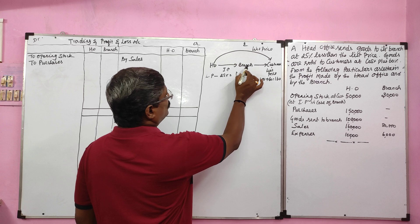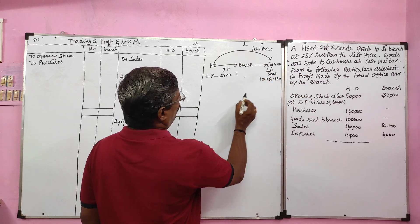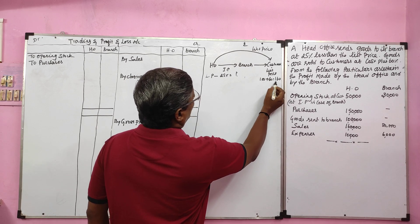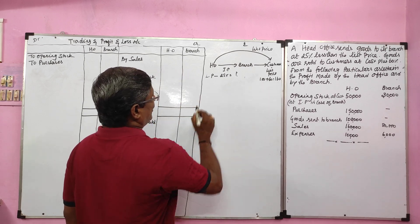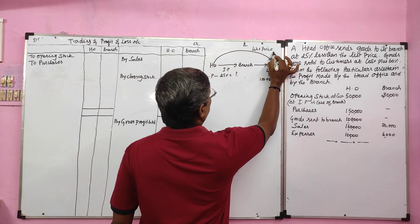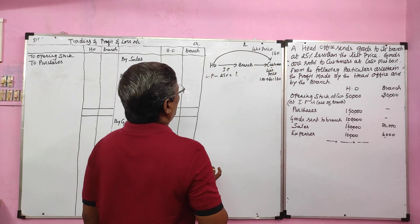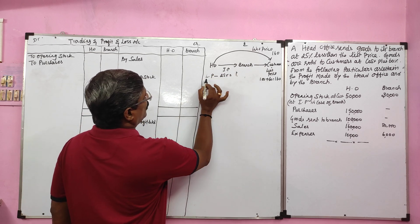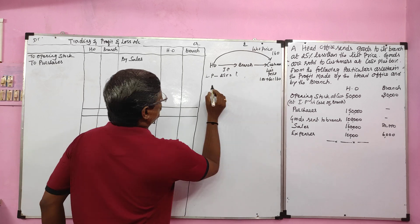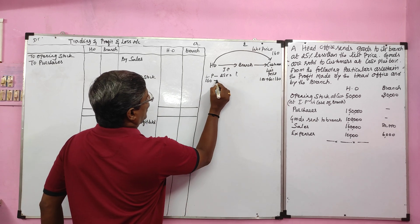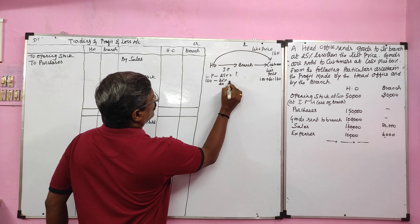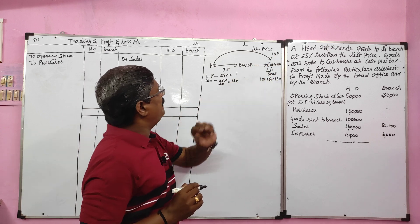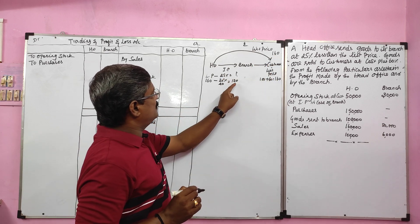The branch sells goods to its customers at cost plus 60% — cost is 100, profit is 60%, so the list price is 160. The head office also sells goods to its customers at the same list price. The head office sends goods to its branch at invoice price: list price 160 minus 25%, which is 40, so invoice price is 120.